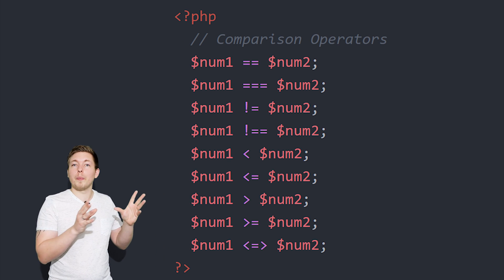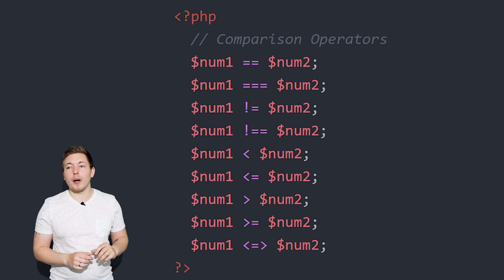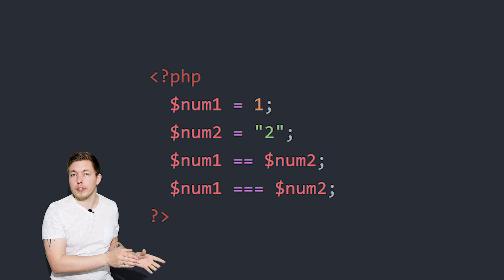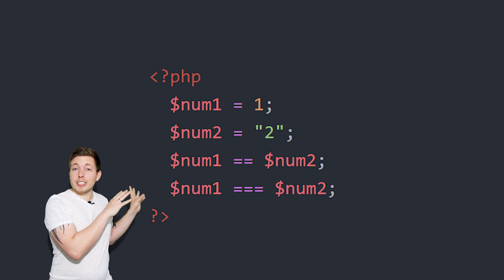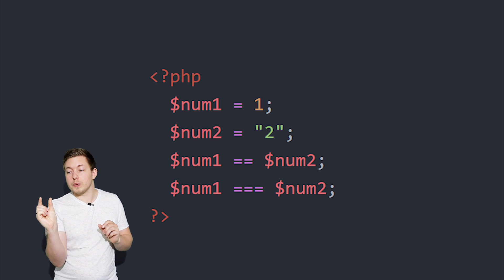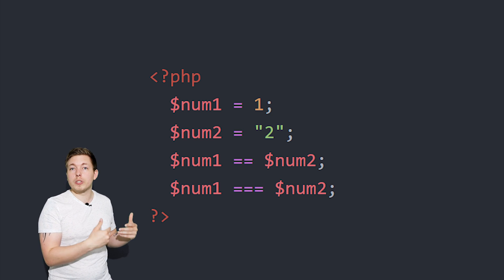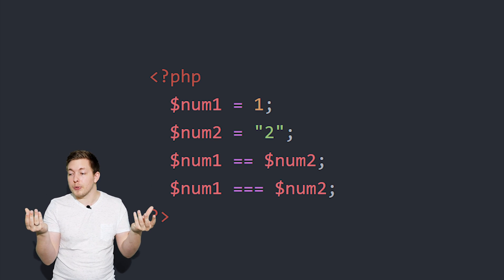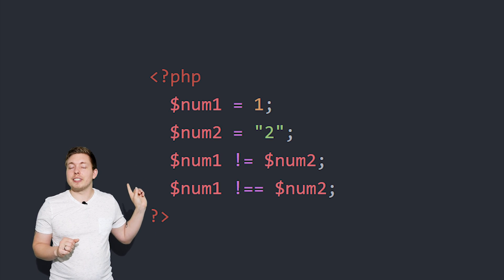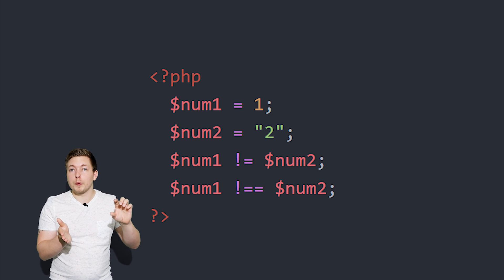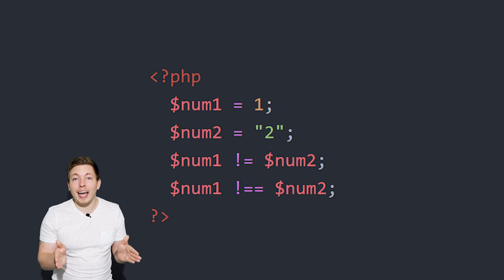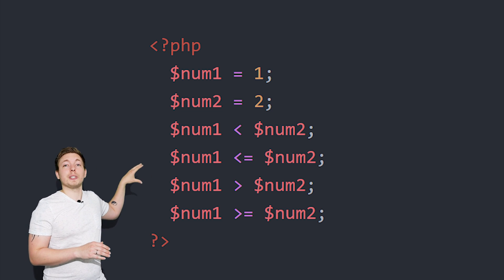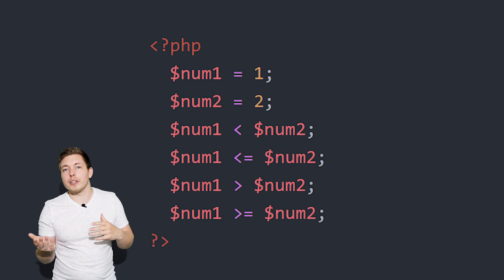Then we have comparison operators, which we use to compare two pieces of data with one another. When we use double equals between two pieces of data, we're asking whether these two are equal — it doesn't matter about the data type. With triple equals, we check whether they're the same value and the same data type. We also have the not-equal-equal version using an exclamation mark to check whether they are not the same value and not the same data type. We can also check whether one number is less than the other, less than or equal to, greater than, or greater than or equal to.